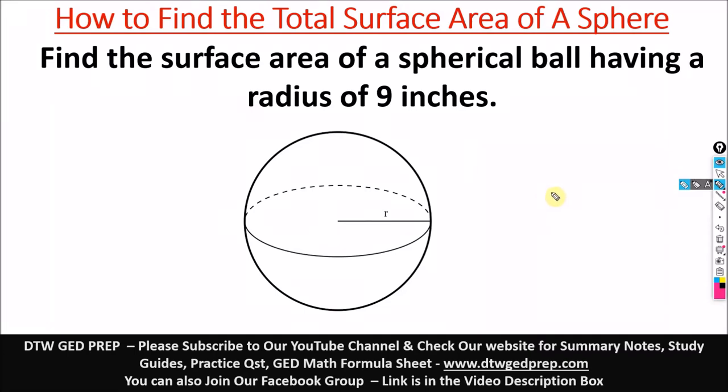Hello and welcome to DTW GED Prep. In today's video we're going to be looking at how to find the total surface area of a sphere. We have this question that says find the surface area of a spherical ball having a radius of nine inches. So our radius of this spherical ball is nine inches.